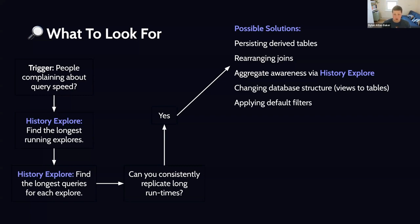Aggregate awareness is a way of creating a persisted table managed by Looker that is aggregated to a specific level. When you ask a query that can be answered by that roll-up, it does so, getting answers much more quickly than if it has to go to the full larger table. To implement this, you'd want to go back to the history explorer in the system activity model and ask what fields are used as a pattern — for example, if everyone is always grouping by product and order date, you probably want to produce a roll-up at those levels. Other solutions include changing the database structure — maybe views to tables, adding partitioning, cluster keys, or indexes depending on your warehouse. You might also find that people are pulling too much data by default and want to apply default filters.